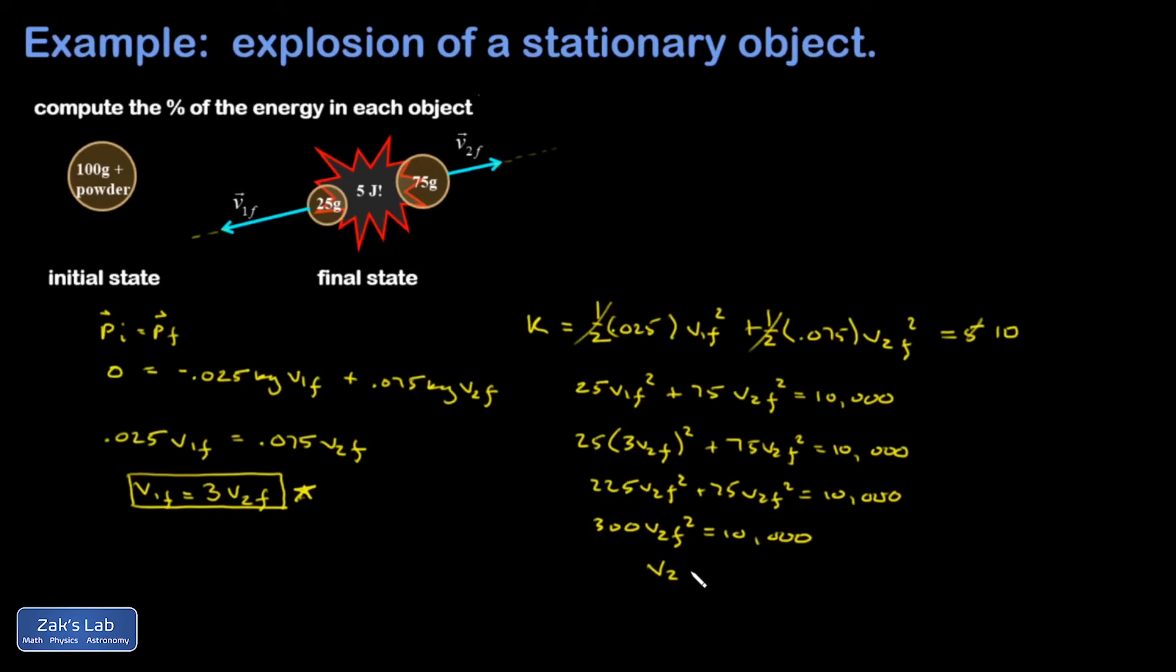And I'm going to go ahead and solve that the rest of the way in my calculator. So 10,000 over 300 square rooted. And I get 5.77 meters per second. If we head back to my momentum equation, then V1 final is going to be 3 times that. So multiply by 3 and I get 17.32.